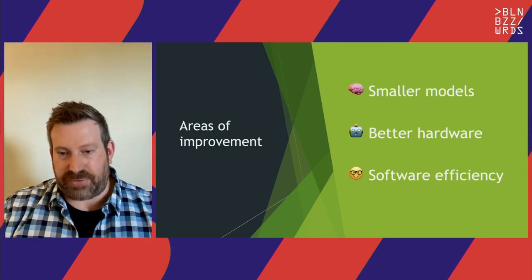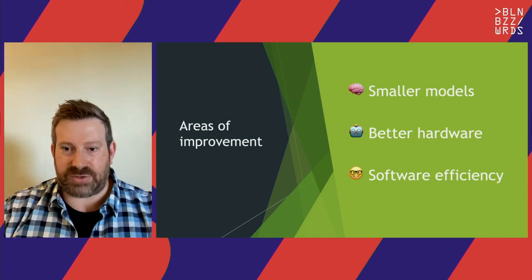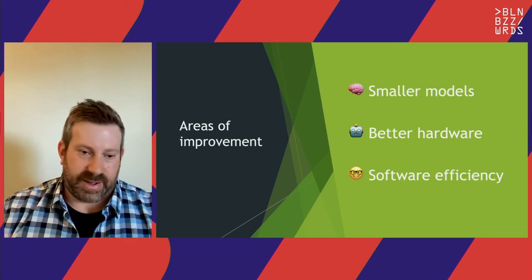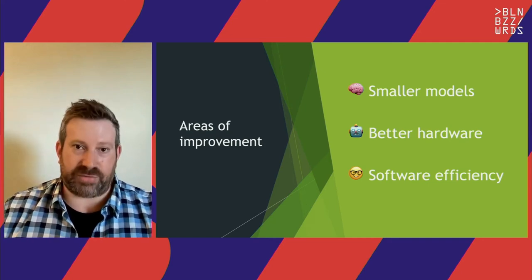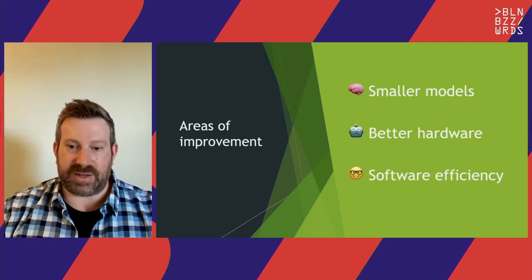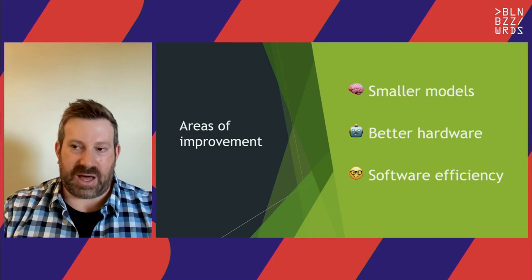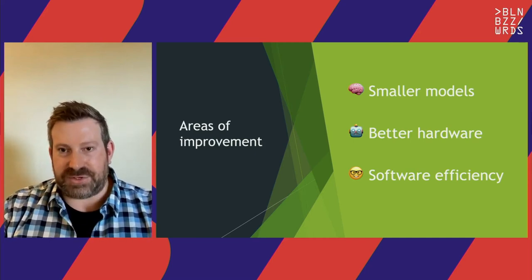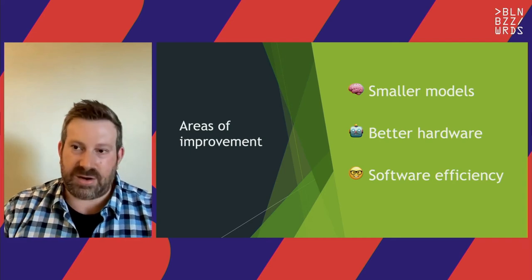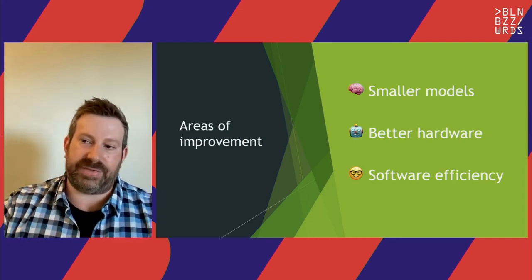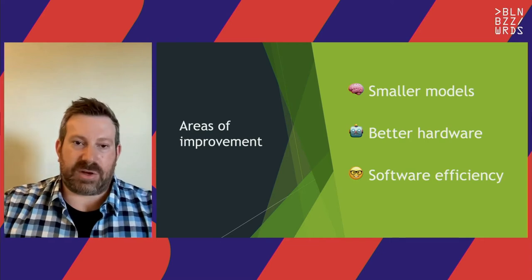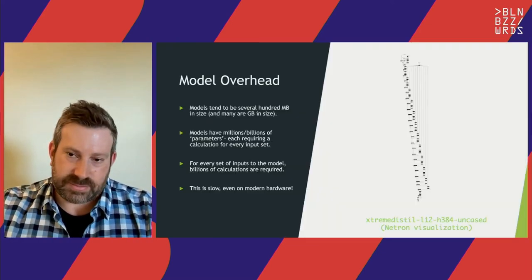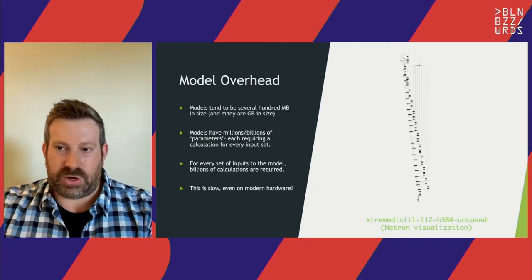The three things people focus on when trying to make inference scalable, faster, and higher throughput are: smaller models, better hardware, and software efficiency. There's a lot of effort that goes into these areas, and there's a whole field around them. I'll give an overview so that if something sounds interesting, you can dive deeper.